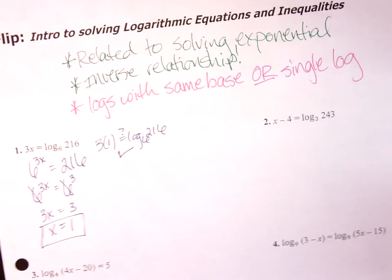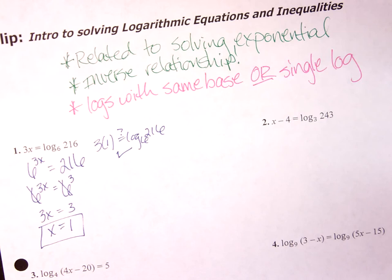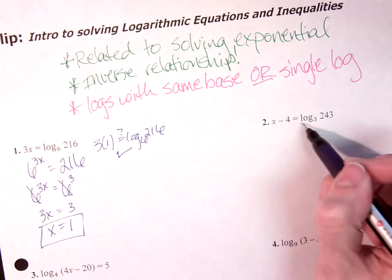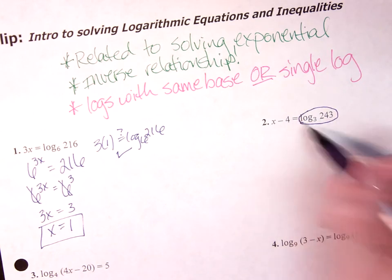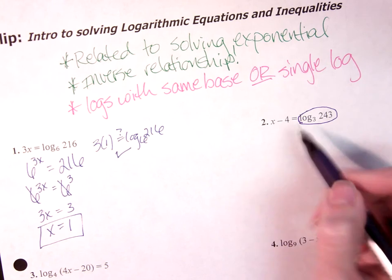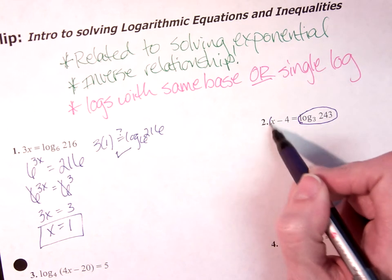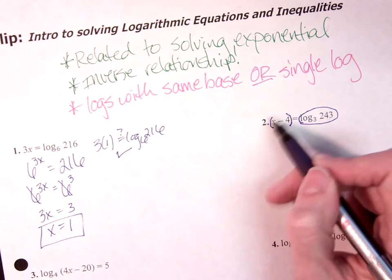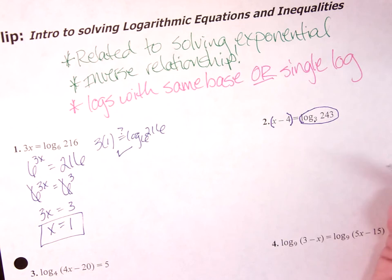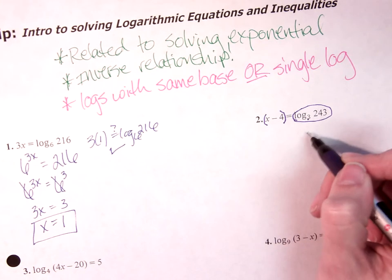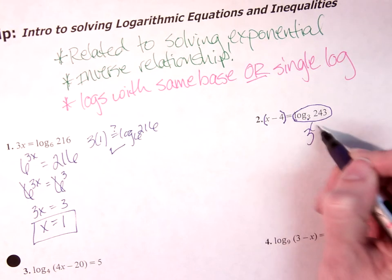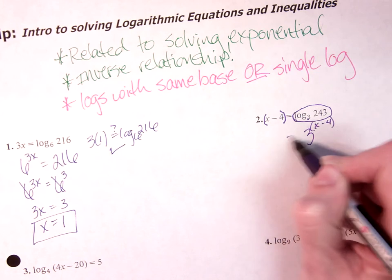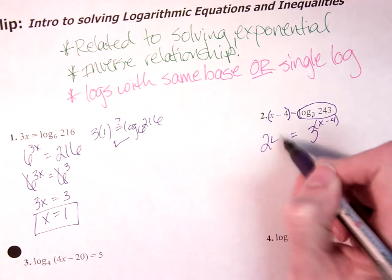So when we move on, I want to look here, and I've got my single log term, but it's set equal to an expression x minus 4, so we want to think of that on its own. This whole side is the power we're raising 3 to.